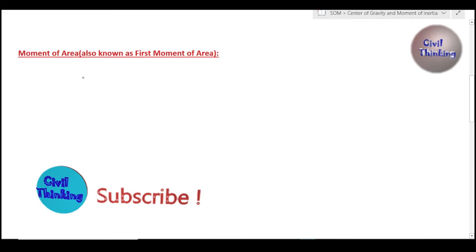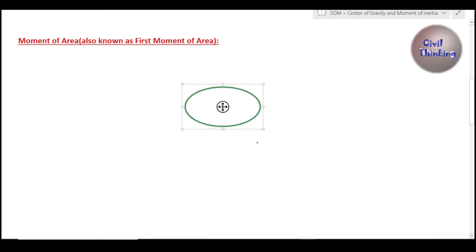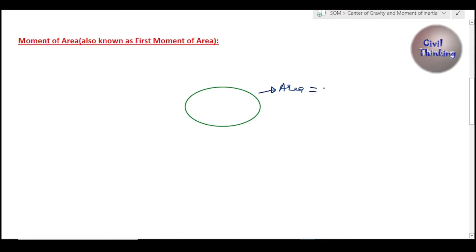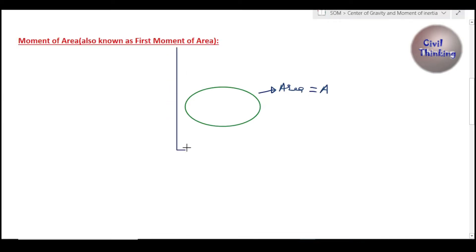Moment of area is also known as first moment of area. To understand what exactly it is, we have to draw a diagram. Consider this 2D area whose total area is A, and let's consider two axes — the x-axis and the y-axis. These two are known as axes of reference because we are going to find the moment of this area about these two axes.